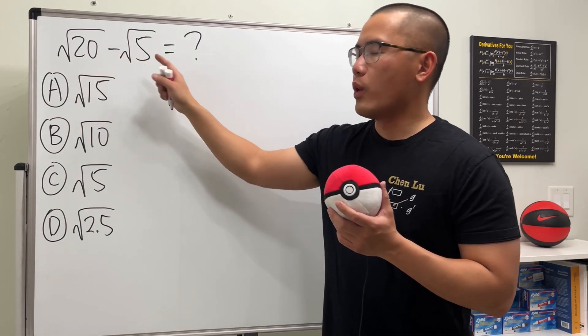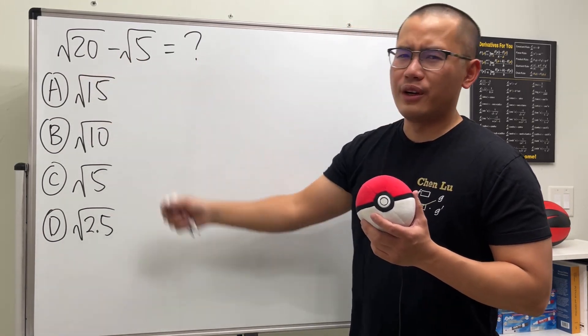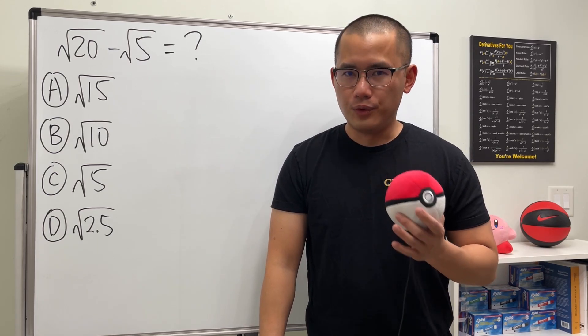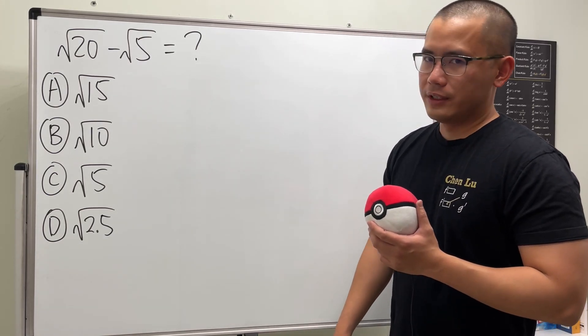Square root of 20 minus square root of 5. What's the answer right here? Go ahead and pause the video and try this first. You're done? Okay, cool.